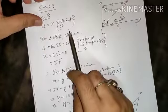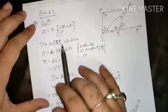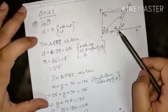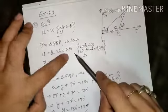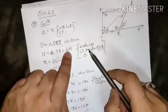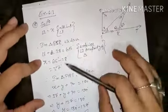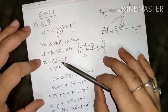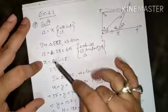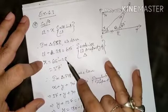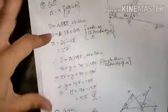Now in triangle QSR, we can see that angle 1 plus 28 equals 65 degrees. We can say this using the exterior angle property of the triangle. So in place of angle 1 we write X, and X equals 65 minus 28, so X equals 37 degrees. We got the answer X equals 37 degrees.